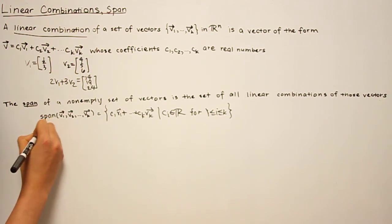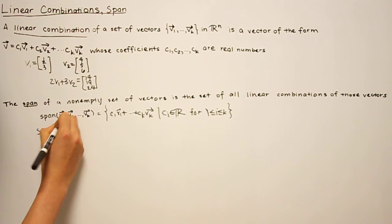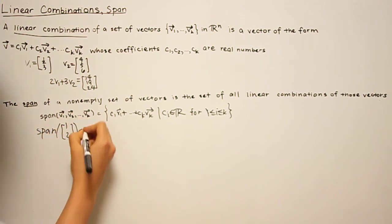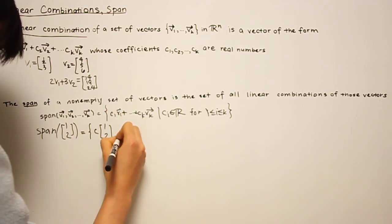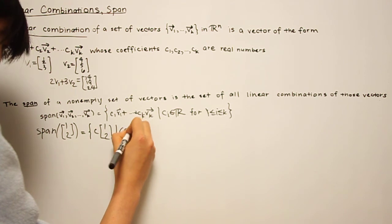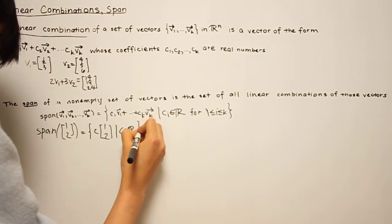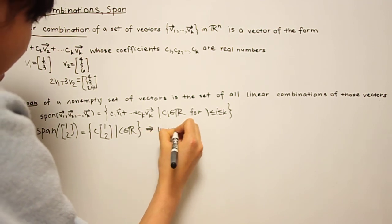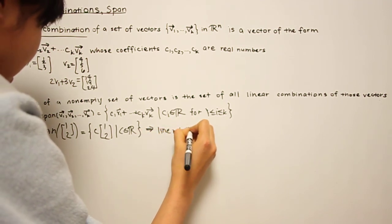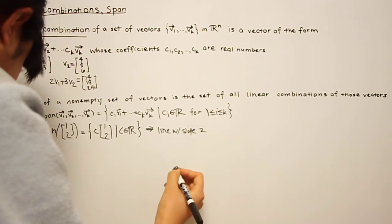So for example, the span of vector [1, 2] is the set of all vectors of the form c times [1, 2], where c is a scalar. So this is a line with slope 2, or the line y equals 2x.